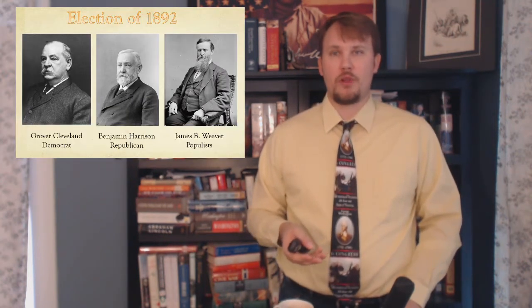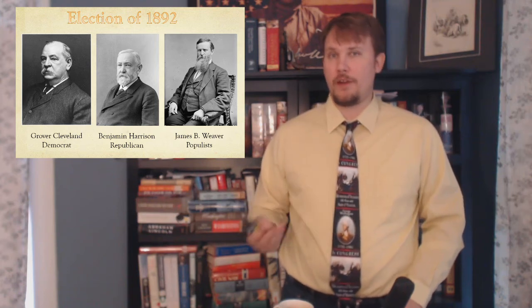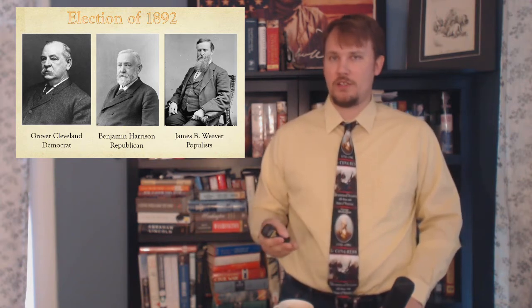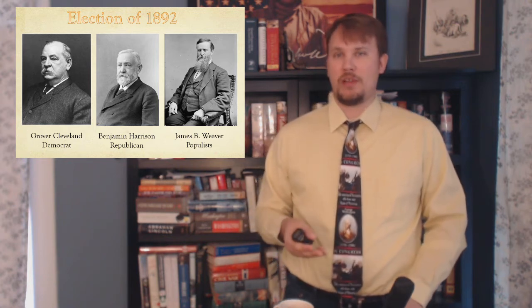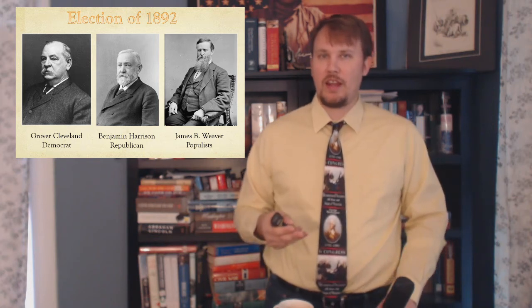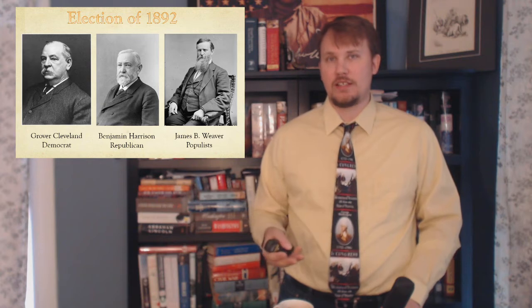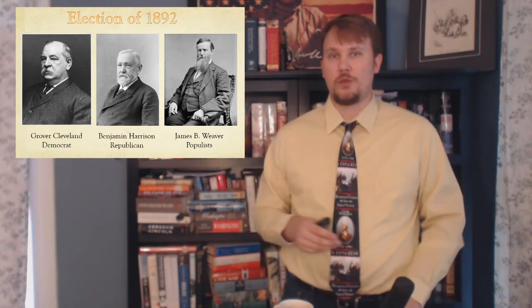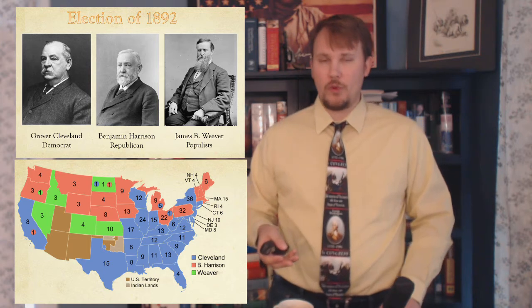The Populists ran a candidate for president in 1892, nominating James B. Weaver, a Union Army veteran, for president, and James G. Field, a Confederate Army veteran, for vice president. The Republicans nominated Benjamin Harrison and the Democrats nominated Grover Cleveland. Since Weaver was a third-party candidate, he actually campaigned nationally, breaking with tradition. In the end, the Populists couldn't capture the presidency — Grover Cleveland won the election of 1892, defeating both Weaver and Harrison.